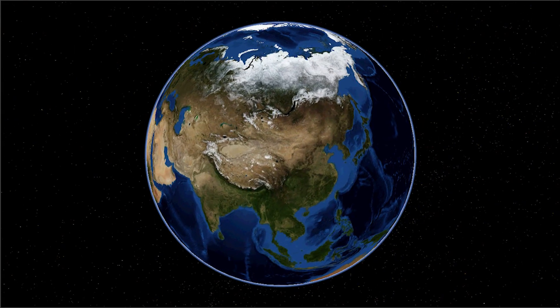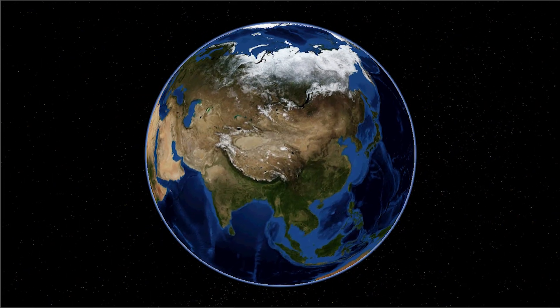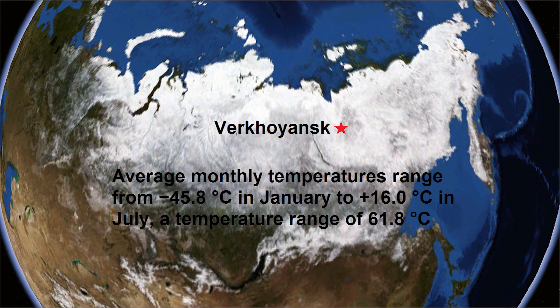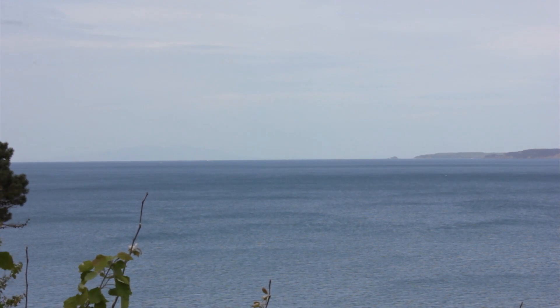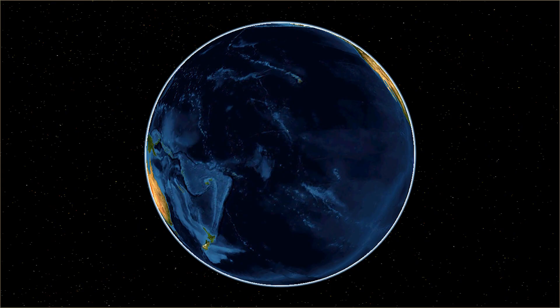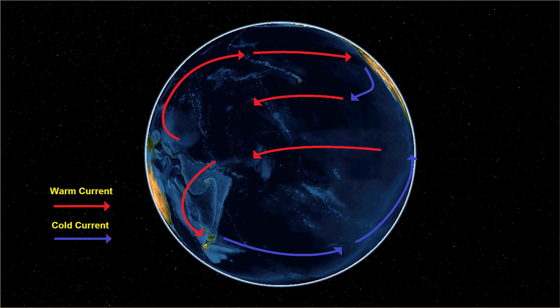Large continental land masses such as Asia have extremes of climate. For example, one town in Russia has the largest temperature range in the world — a temperature range of 61.8 degrees Celsius. Ocean currents also have a big influence on climate, and 70% of this planet is ocean. When an air mass passes over a warm ocean current, the air mass is warmed. When an air mass passes over a cold ocean current, it is cooled.